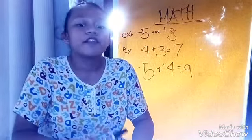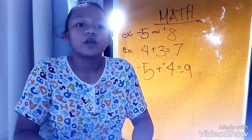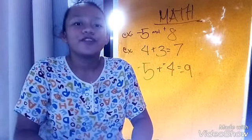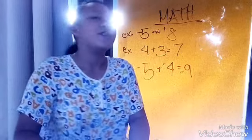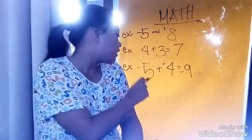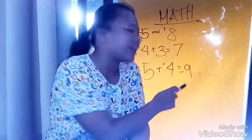While unlike sign, find the sum of their opposite value and use the sign with their greater opposite value. Example, negative 5 plus positive 4 is equal to negative 9.